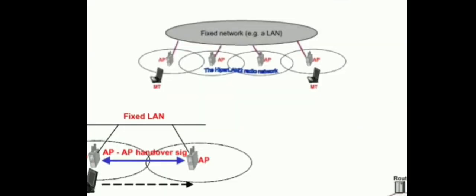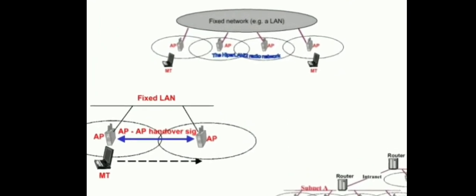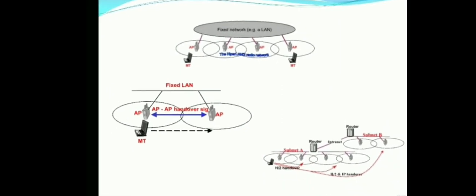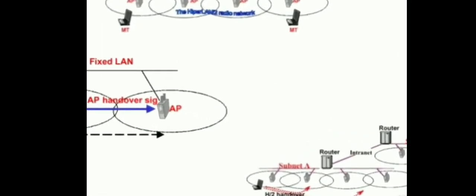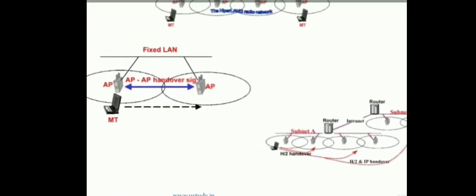In the HiperLAN network model, access points are connected to the fixed LAN. These access points are interconnected to convey information from one mobile terminal to another. Access points are connected using handover signals. Mobile terminals are connected via routers to an intranet, and subnet masks are used to connect with different types of networks.